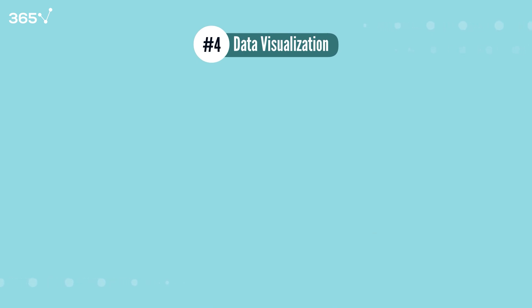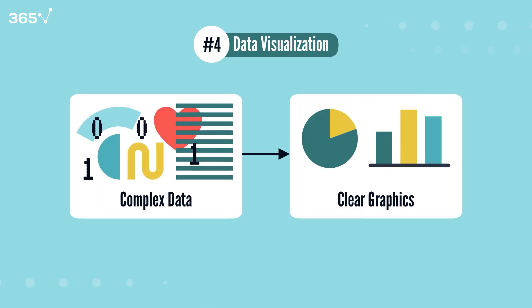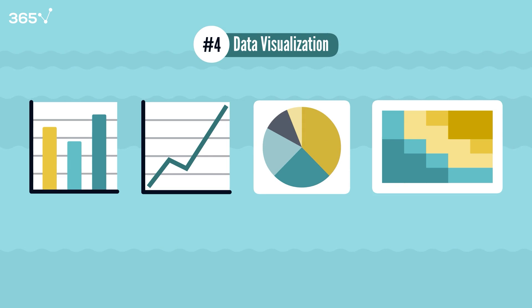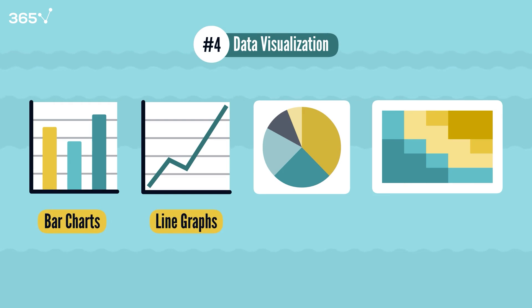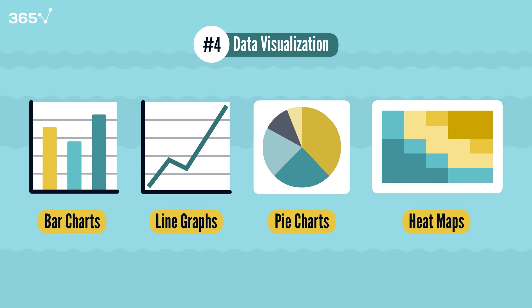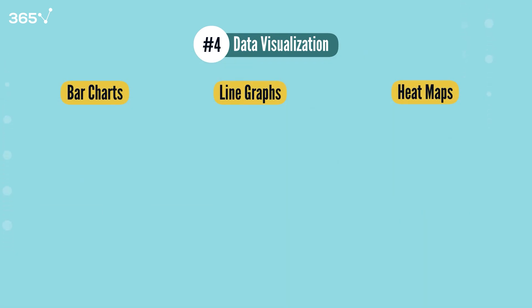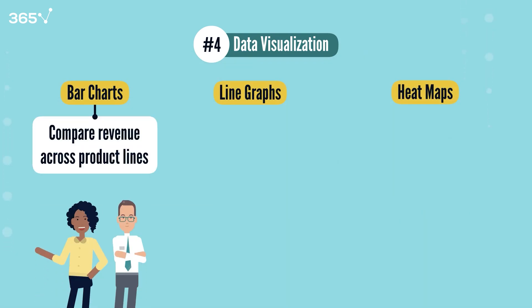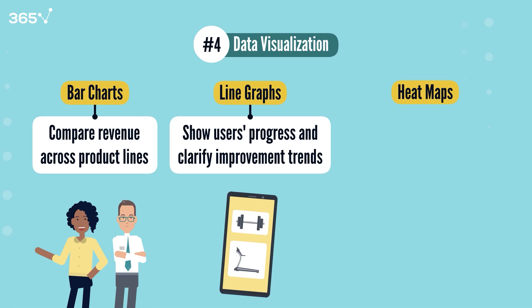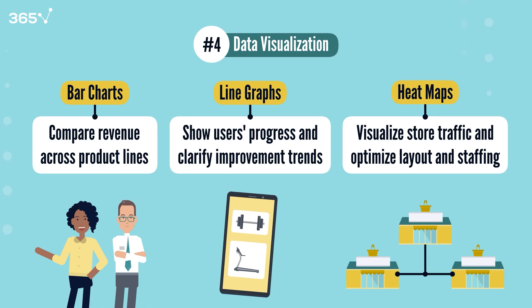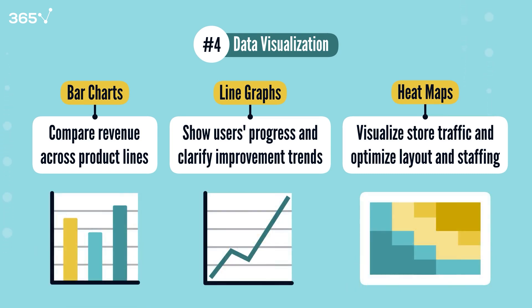Concept 4: Data Visualization. Data visualization transforms complex data into clear, compelling graphics that reveal patterns and insights. We use various types: bar charts for comparing categories, line graphs for tracking trends, pie charts for showing proportions, and heat maps for complex patterns. For example, a sales team may use bar charts to compare revenue across product lines; a fitness app can show users' progress through line graphs; and a retail chain can use heat maps to visualize store traffic, optimizing store layout and staffing. These visual tools transform complex data into clear stories anyone can understand.